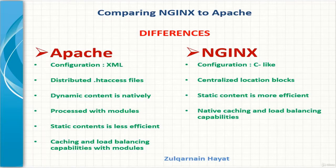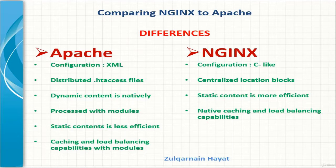Programmers working with NGINX configuration might find it a bit more like programming compared to Apache, which might feel more like writing a document. Apache also provides distributed configuration through the use of .htaccess files. Each directory under the webserver root directory can contain a configuration file specifically for that directory. This allows default configuration to be overwritten, but it also can slow down processing because the .htaccess file must be processed before each request. NGINX uses a more centralized configuration with all configuration files loaded at the same time.